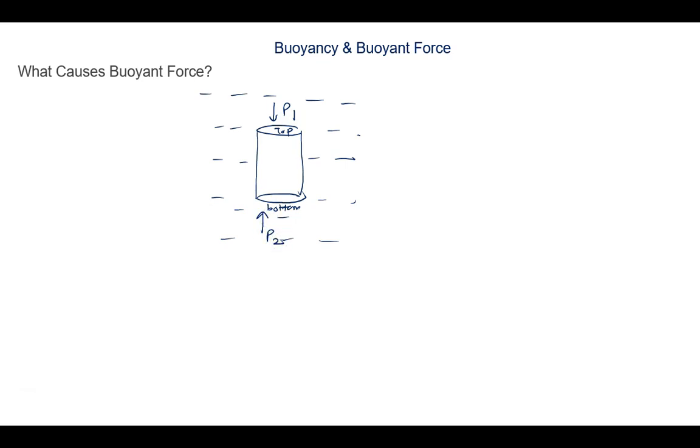As we discussed earlier, pressure acts in all directions: upward, downward, left, right, everywhere pressure acts. And also we know pressure is given by h rho g. Pressure depends on the height. So of course, P2 will be greater than P1.